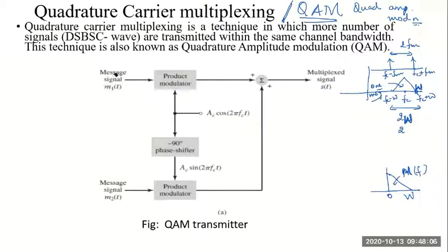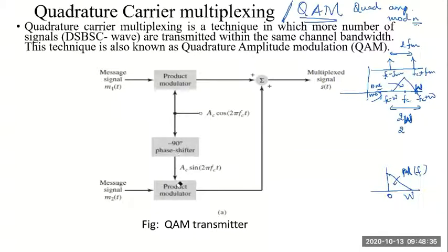You send two different messages on the same bandwidth by modulating them with two carriers which are in phase quadrature with each other. In the block diagram, the first message M1 is given to the upper product modulator with carrier AC cos(2π FCt) — an in-phase carrier — giving a DSBSC output. The second message goes to the lower product modulator with a sine carrier, AC sin(2π FCt), a 90-degree phase-shifted carrier.